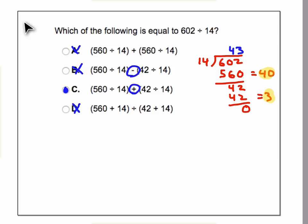So the answer has to be C. If you look carefully at these, 560 plus 42 equals 602.